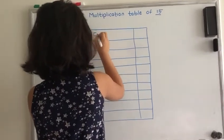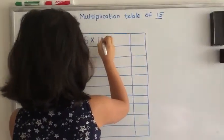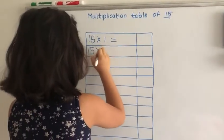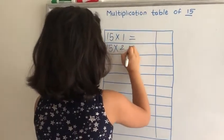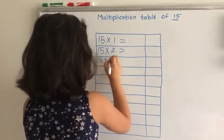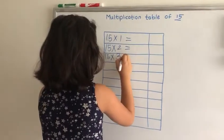15 times 1 equals, 15 times 2 equals, 15 times 3 equals